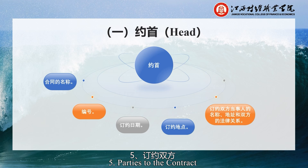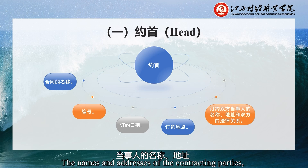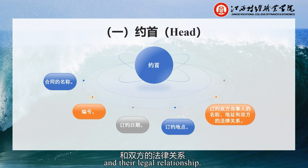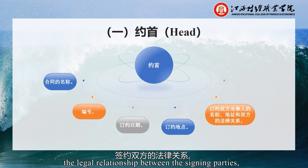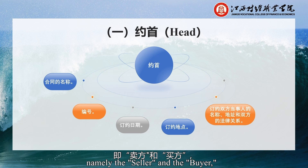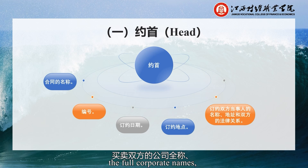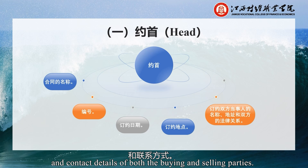Fifth, Parties to the Contract — the names and addresses of the contracting parties and their legal relationship. In international goods sales contracts, the initial section must clearly state the legal relationship between the signing parties, namely the seller and the buyer, and separately specify the full corporate names, addresses, and contact details of both the buying and selling parties.